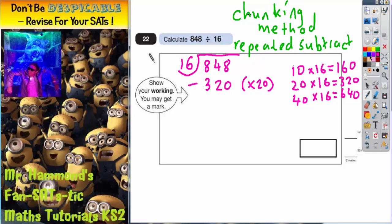And now what we need to do is actually work that out. So if we work this out, 8 take away 0 is 8, 4 take away 2 is 2, 8 take away 3 is 5. So we're now down to 528.